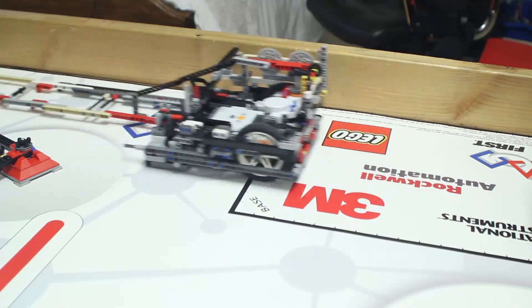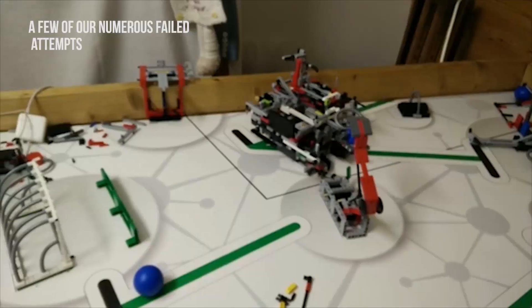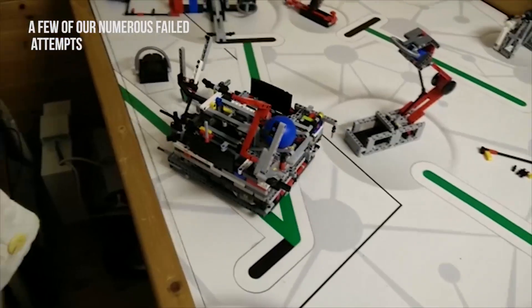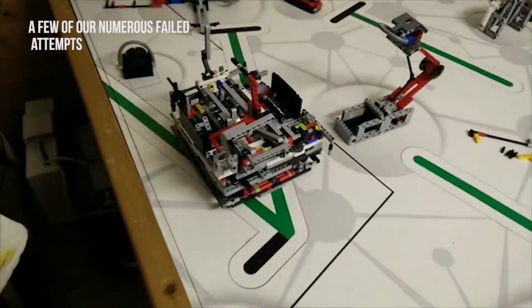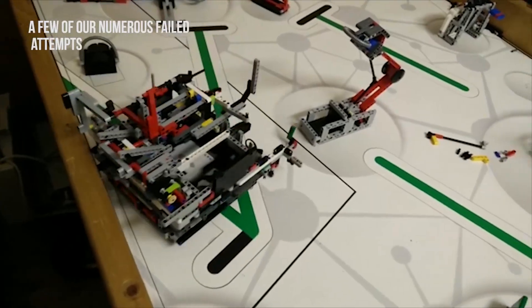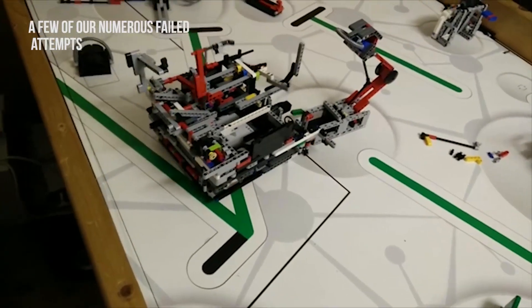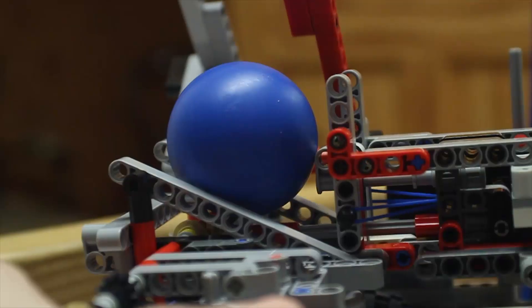This is our fifth year in FLL and our advice would be to test, like, a lot, so much that even when you think it's perfect, still try and improve it and account for anything like border wall size, lighting conditions, variation in the size of the mat, etc.